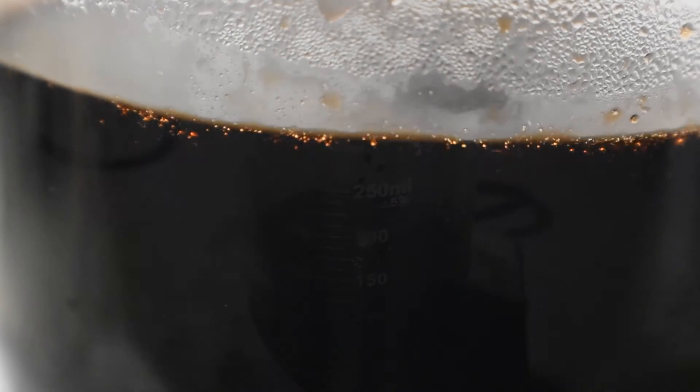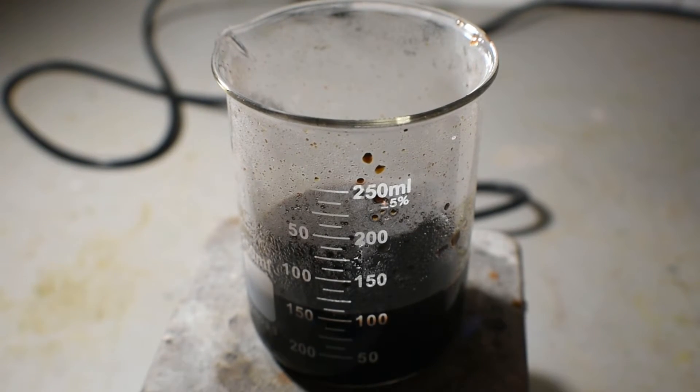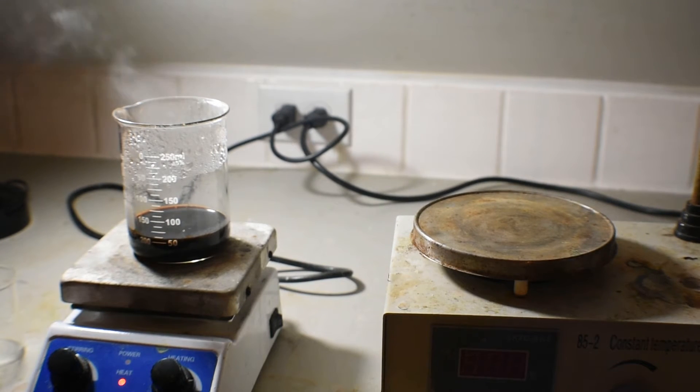Now I'm going to bring this mixture to a light boil and evaporate it down to 60 ml. Now that the volume has been reduced, I'm going to take it off heat and allow it to cool to near room temperature.